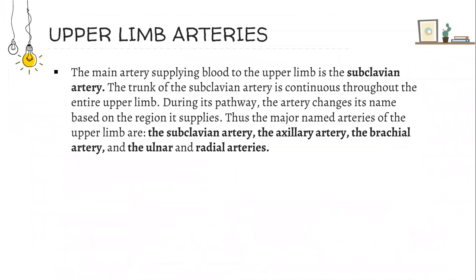Upper limb arteries. The main artery supplying blood to the upper limb is the subclavian artery. The trunk of the subclavian artery is continuous through the entire upper limb. During its pathway, the artery changes its name based on the region it supplies. Thus, the major named arteries of the upper limb are the subclavian artery, axillary artery, the brachial artery, and the ulnar and radial arteries.